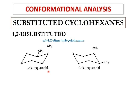When the ring flips, all axial groups become equatorial and all equatorial groups become axial. The axial CH₃ is now equatorially oriented and still projected upwards, and the equatorial CH₃ is now axially oriented and also projected upwards. So after flipping, one CH₃ is axial and the other is equatorial — again an axial-equatorial orientation. Energy-wise, both conformations have similar energy since one group is axial and the other equatorial in both cases.